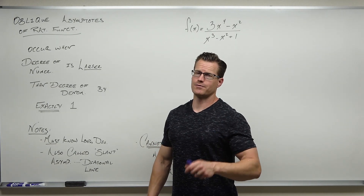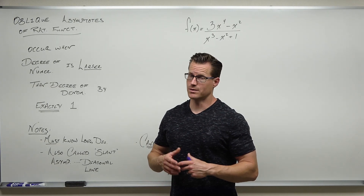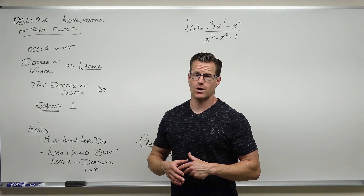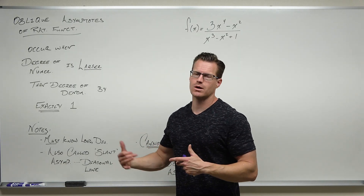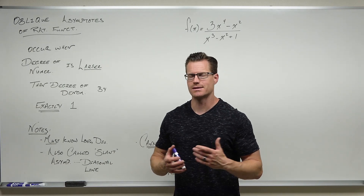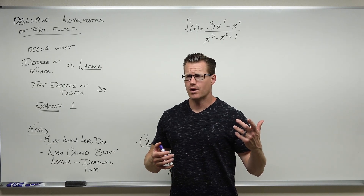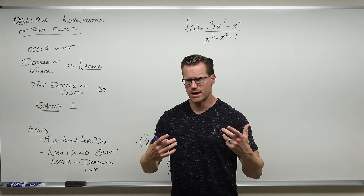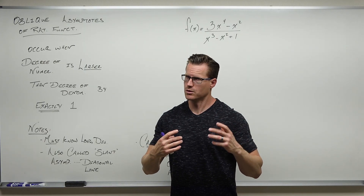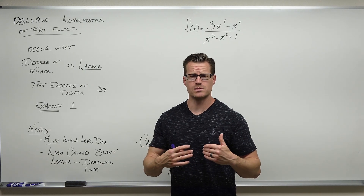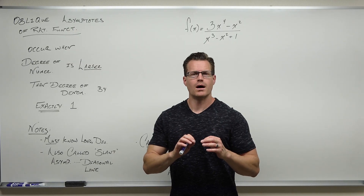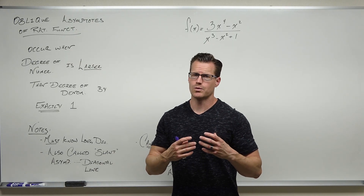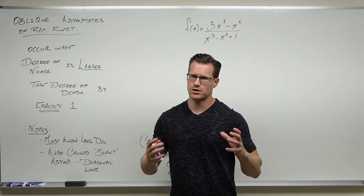Hey there. Now that we have a good feeling for what a horizontal asymptote is, why it happens, and how they work, we're going to talk about what's called an oblique asymptote. It's sometimes called a slant asymptote due to the fact that it's a diagonal line. This video, the last video, and the next video are all dealing with what is called end behavior of a rational function.